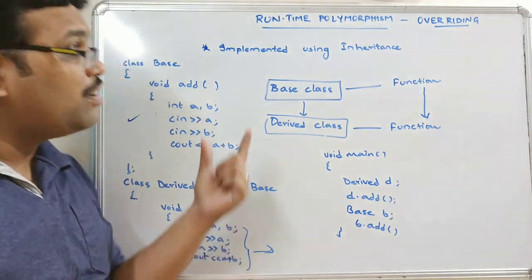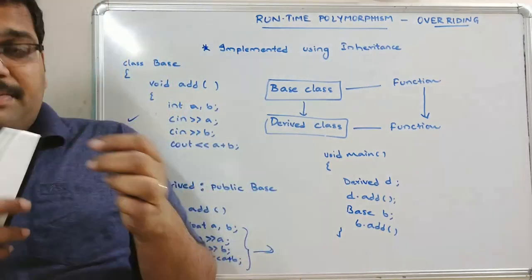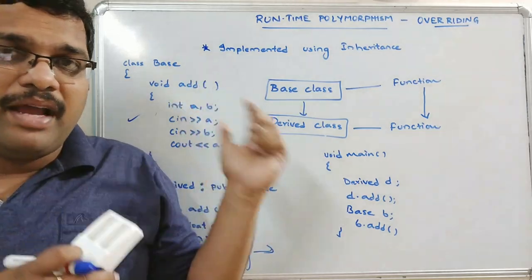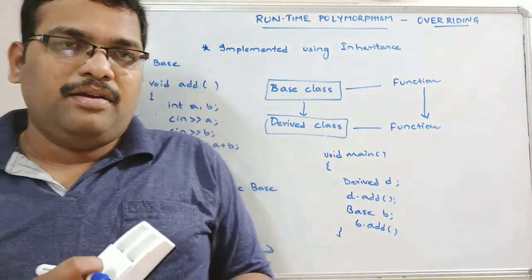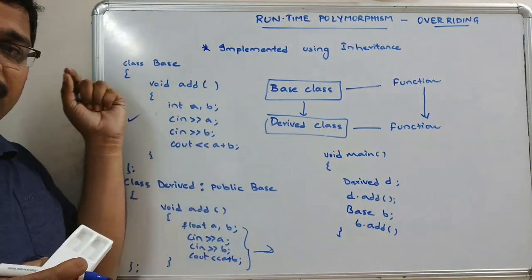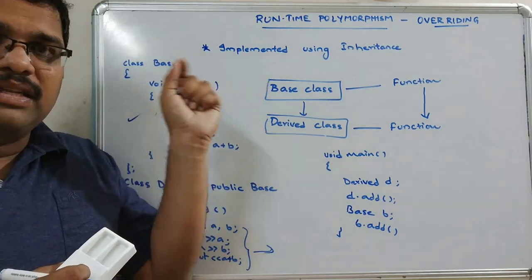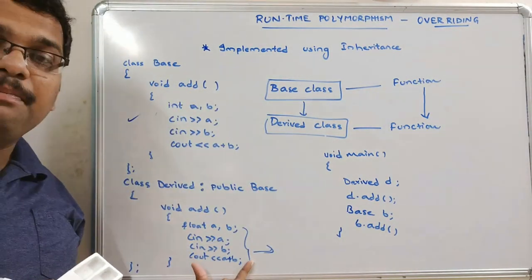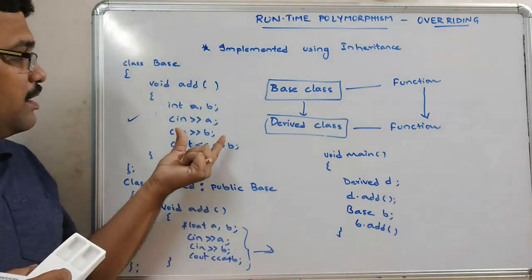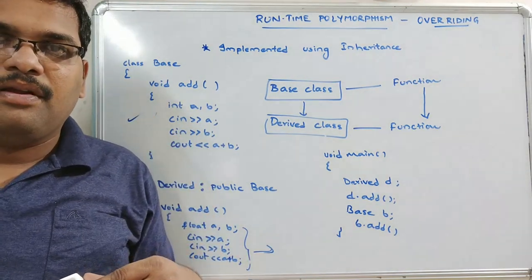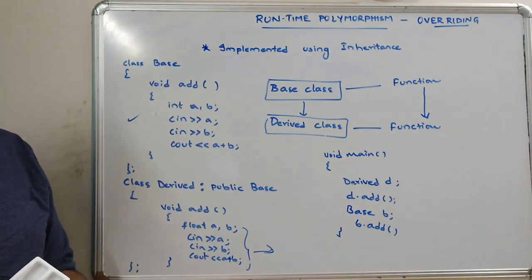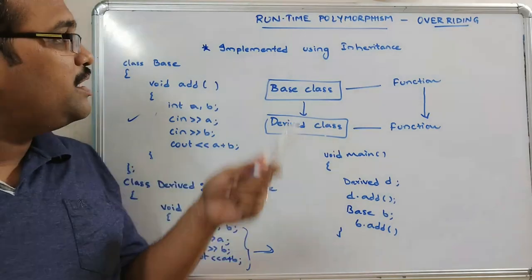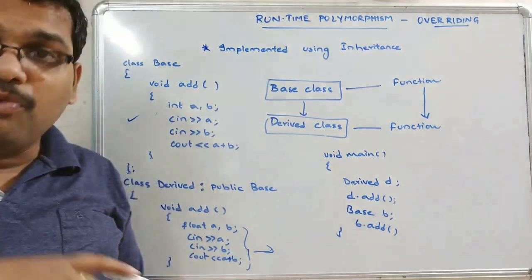This is called method overriding. There is a slight difference between method overloading and method overriding. In overriding, everything — return type, function name, number of parameters, and data type of each parameter — should be the same. Only then will the compiler treat it as an overriding method. If you have any doubts, we will execute a program demonstrating this runtime polymorphism.